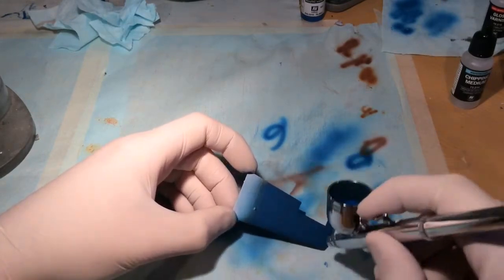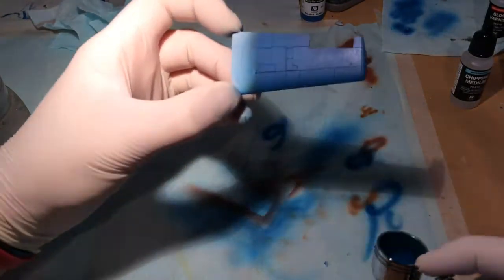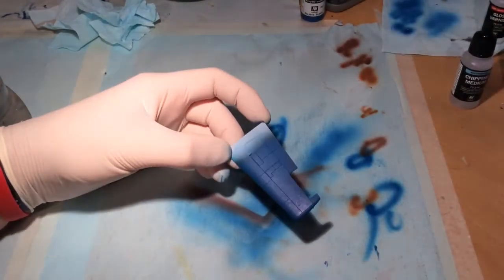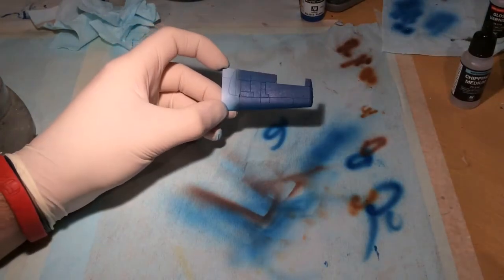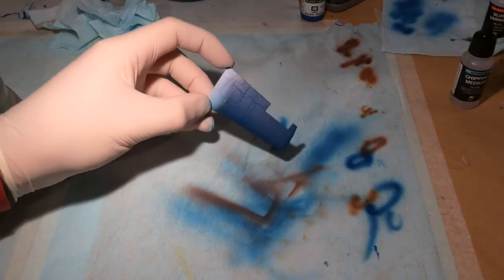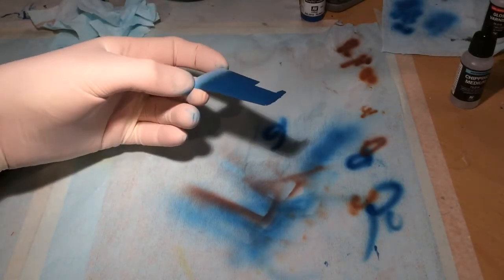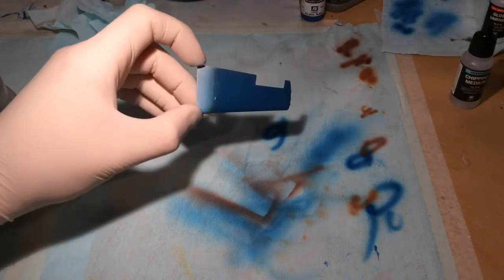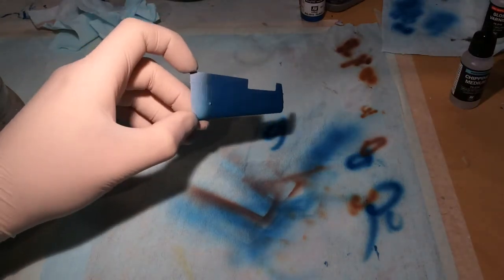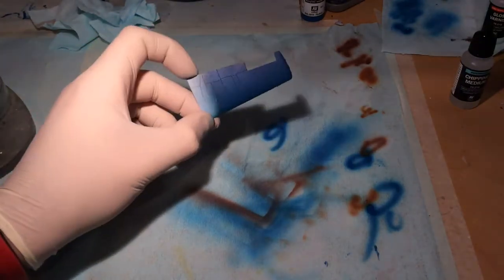Dry it off once more, see if it needs another layer. So we've got a completely opaque layer of the medium blue on there now. And we'll leave this to dry for a while and we'll come back to it and we'll start chipping.